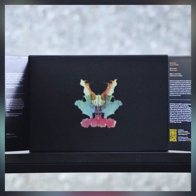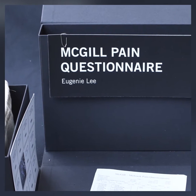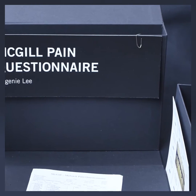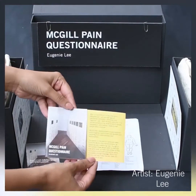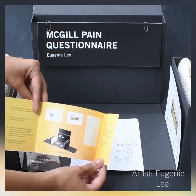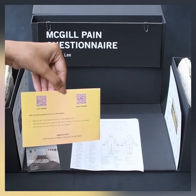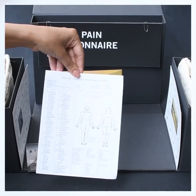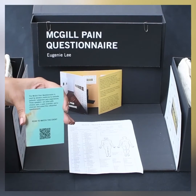Today we are unboxing another exhibit from one of our past exhibitions, Psyche. This exhibit is called the McGill Pain Questionnaire. This exhibit takes words from the objective pain measuring tool, the McGill Pain Questionnaire. Artist Eugenie Lee uses this as the context to visually explore different types of pain and the subjective aspects of it. This includes shame, desperation, anxiety and more.